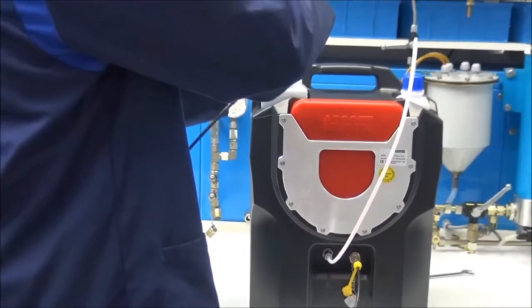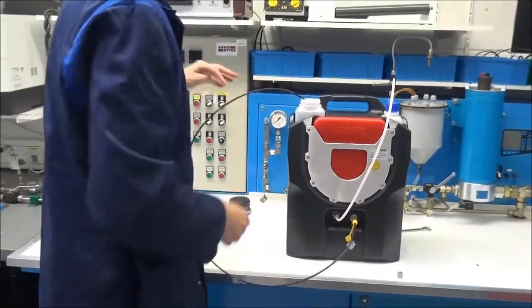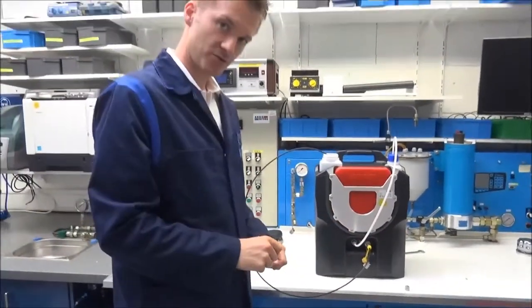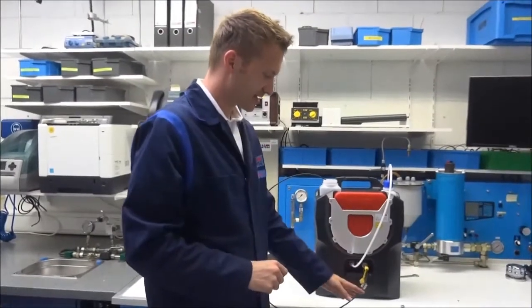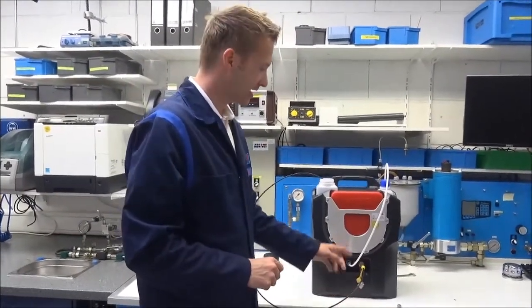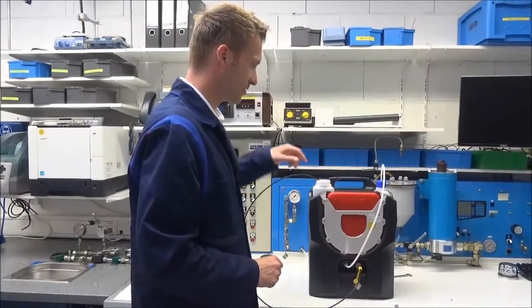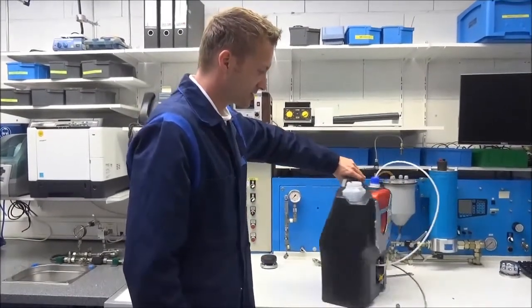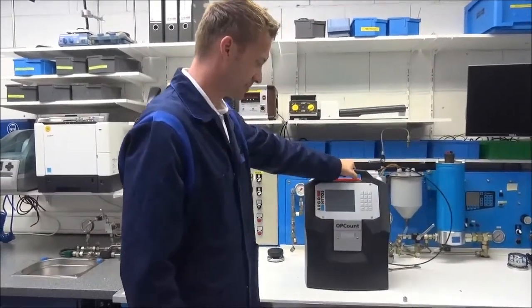If you do a high pressure sample, you just reverse the two, means you take the sample in line from the high pressure line and use that one as the return line to the waste container. But let's just demonstrate how a sample is done.